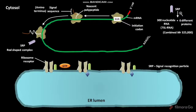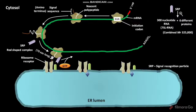The SRP then binds to both the signal sequence and the ribosome, and then binds GTP. Due to this binding, polypeptide elongation halts. At that time, the polypeptide is 70 amino acids long and the signal sequence has completely emerged from the ribosome.